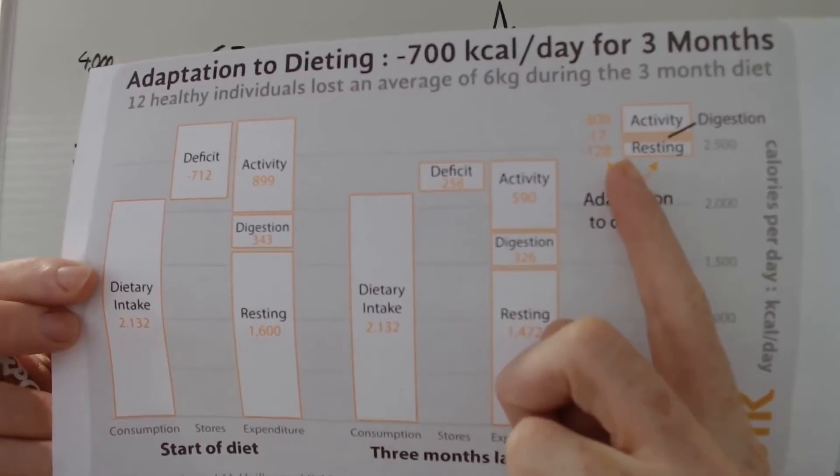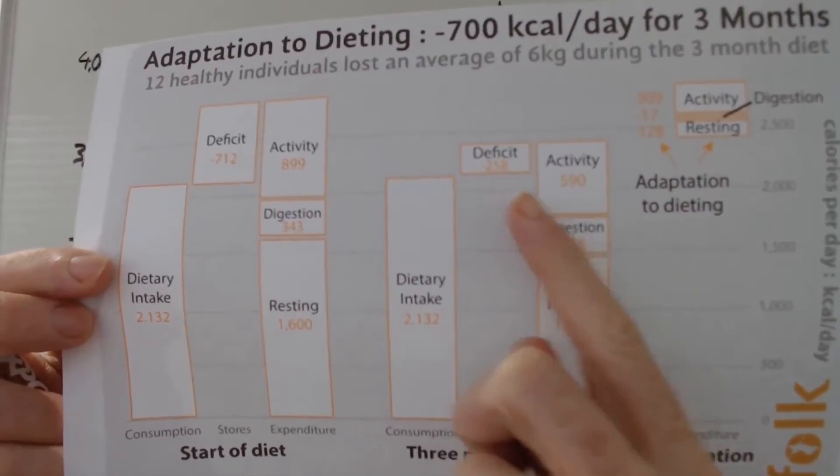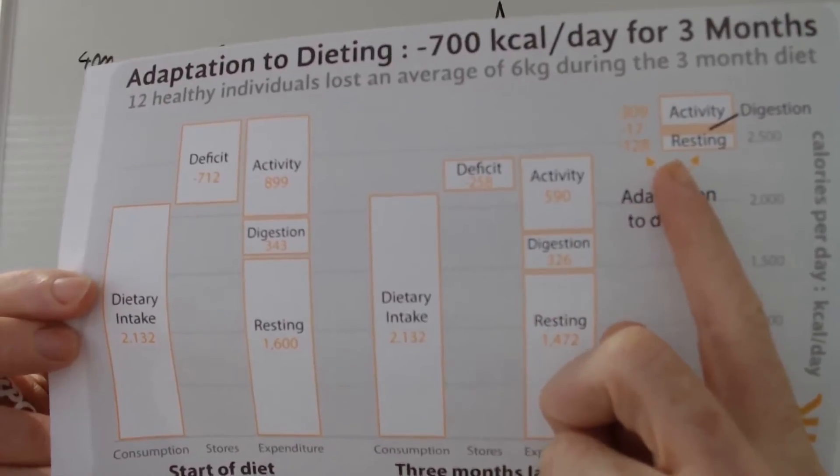And what they showed was that the deficit, after losing six kilos, the deficit collapsed from 700 calories down to 258. And this is the adaptation that we're interested in.